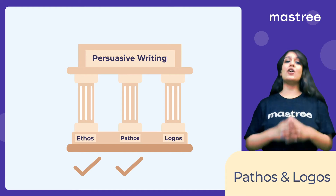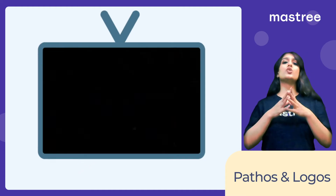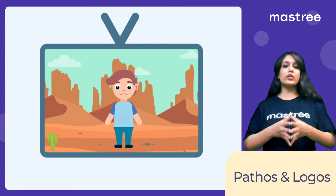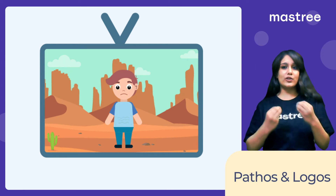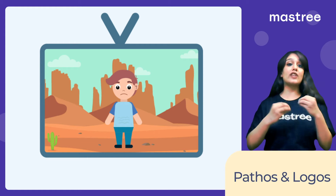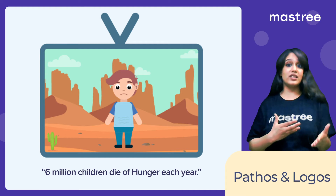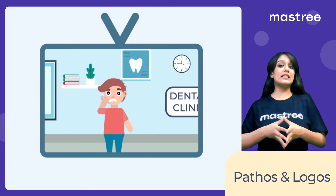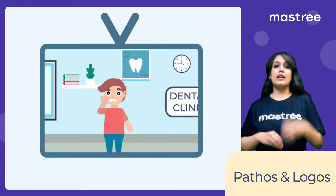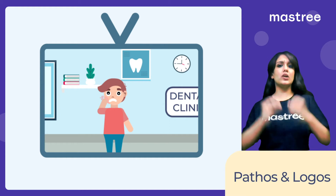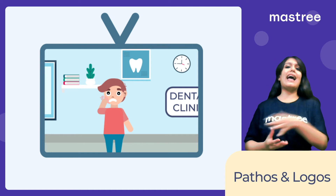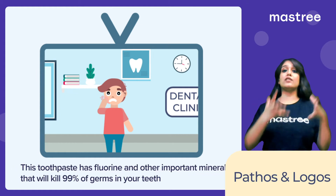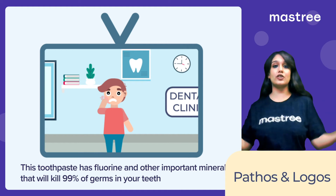Let us now cover the last one, which is logos. To understand logos, let's revisit the example of an NGO broadcasting a television ad. You will notice that along with an extremely emotional story, the ad tends to give us a lot of factual information, like '6 million children die of hunger each year' or 'the earthquake left 20,000 people homeless.' We will find a similar pattern if we look at the example of a toothpaste ad. The company selling the toothpaste really wants their viewers to buy their product, so they add facts like '9 out of 10 dentists recommend this toothpaste' or 'this toothpaste has fluoride and other important minerals that will kill 99% of germs in your teeth.'